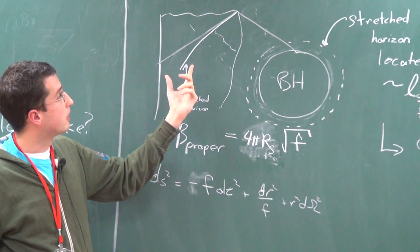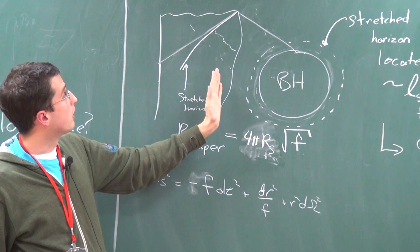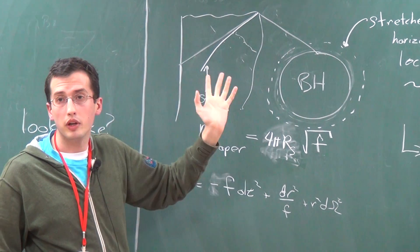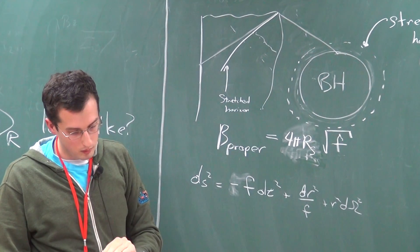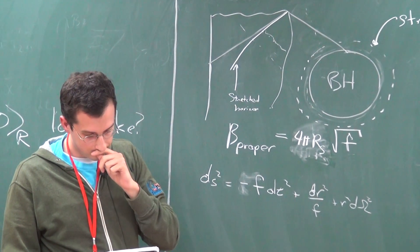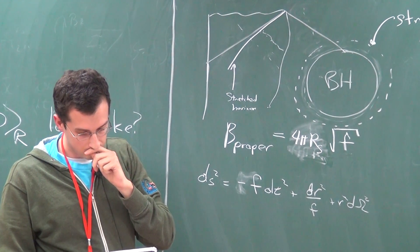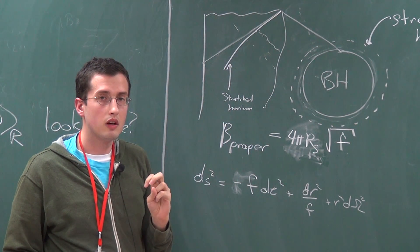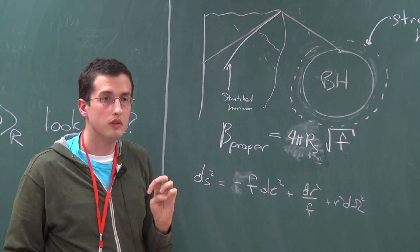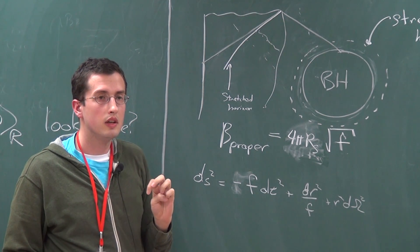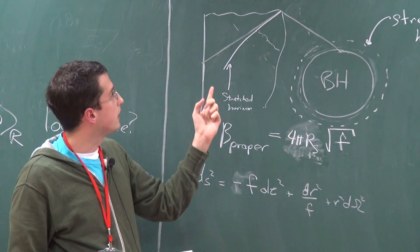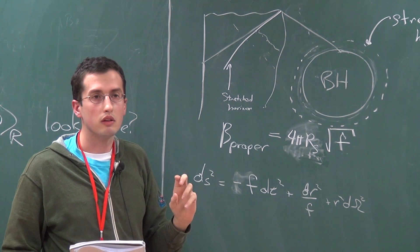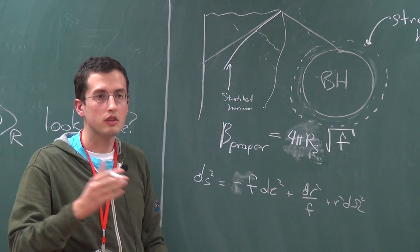The membrane paradigm is a really useful way to talk about black holes. The strange part is that if you're an observer falling in free fall, you're supposed to not see the membrane — we'll get to that eventually. Regarding time dependence of the stretched horizon's area: the stretched horizon is a timelike curve but one of constant r, so it should have constant area.